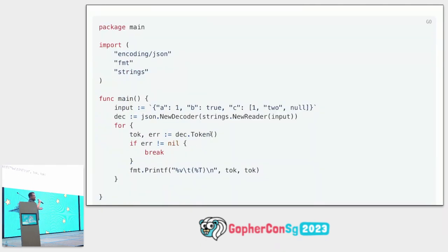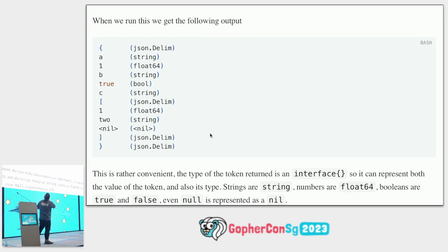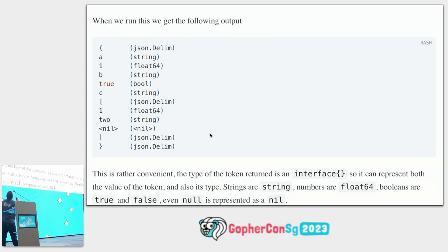We can write Go code to process this: wrap the input in a strings.Reader since json.NewDecoder takes a reader, then call decoder.Token over and over until we hit an error at end of input. The output is exactly what was described — the curly, 'A', one, 'B', true, 'C' — and they are actually typed: 'A' is a string, one is a float64, and true is an actual Go boolean, not just the string 'true'.